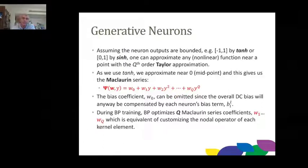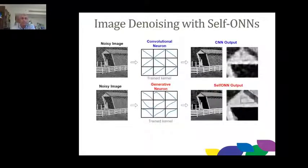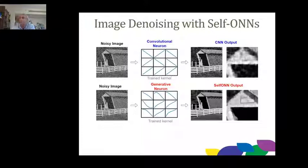Every non-linear function is customized during training. As one example: a deep CNN denoising an image with additive white Gaussian noise produces blurred edges and patching artifacts, whereas with SONNs — since we customize the transformation — we can achieve almost perfect outcomes with very clean edges and almost completely suppressed noise.